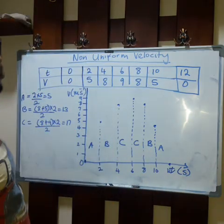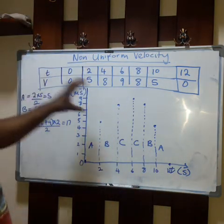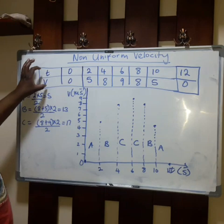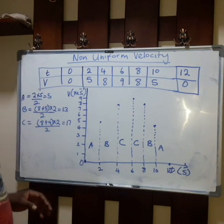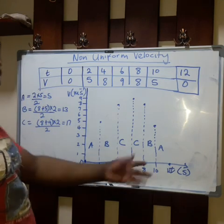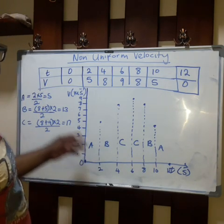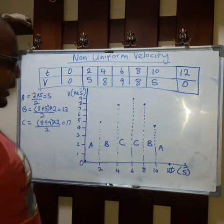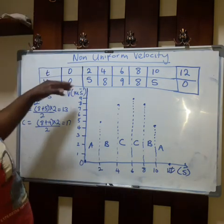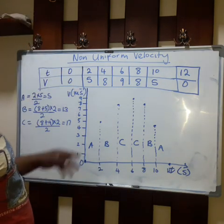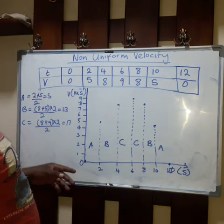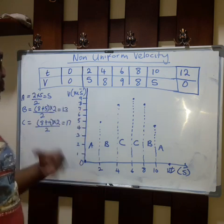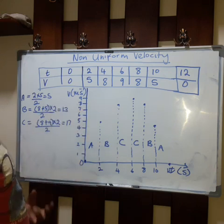In front of me here I've got a table of values. I decided to put values of time and velocity. On my horizontal axis, that is the time given in seconds. On my vertical axis, that is the velocity given in meters per second.